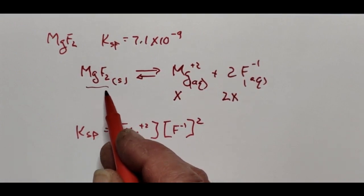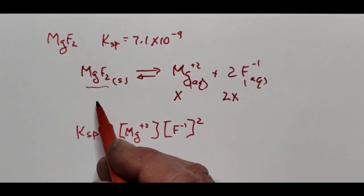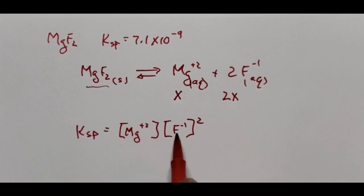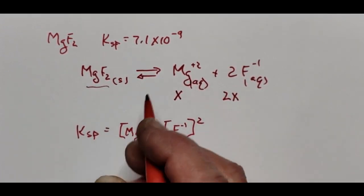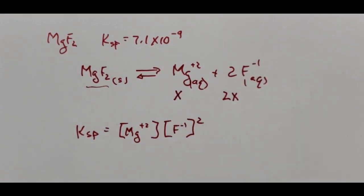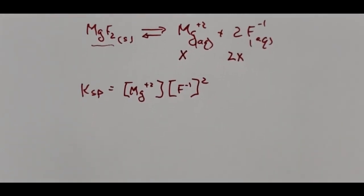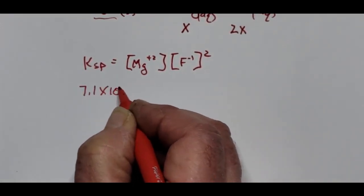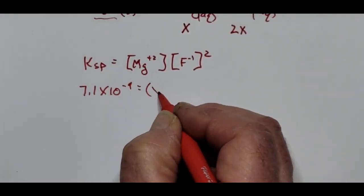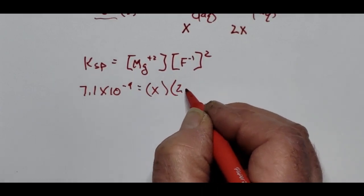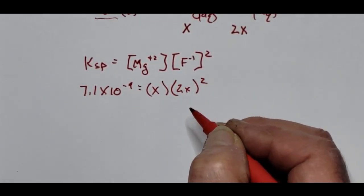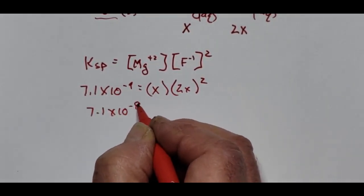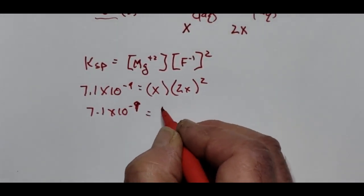The minus x for the solid doesn't appear in the Ksp expression since solids are excluded. Plugging in: 7.1 × 10⁻⁹ = (x)(2x)², which simplifies to 7.1 × 10⁻⁹ = 4x³.